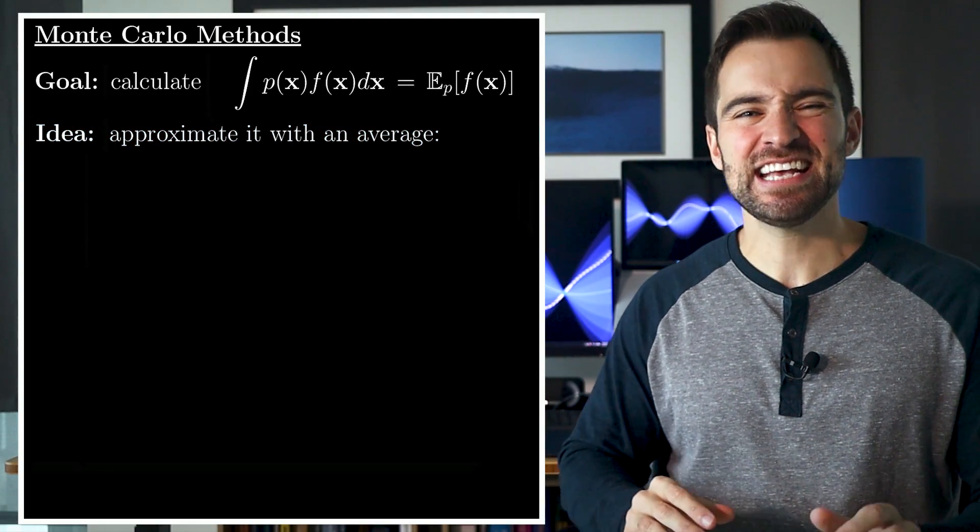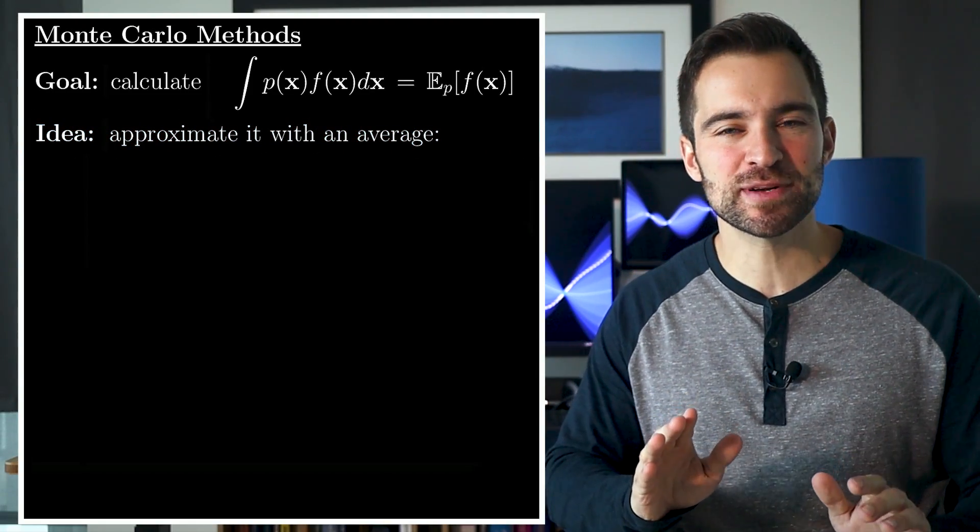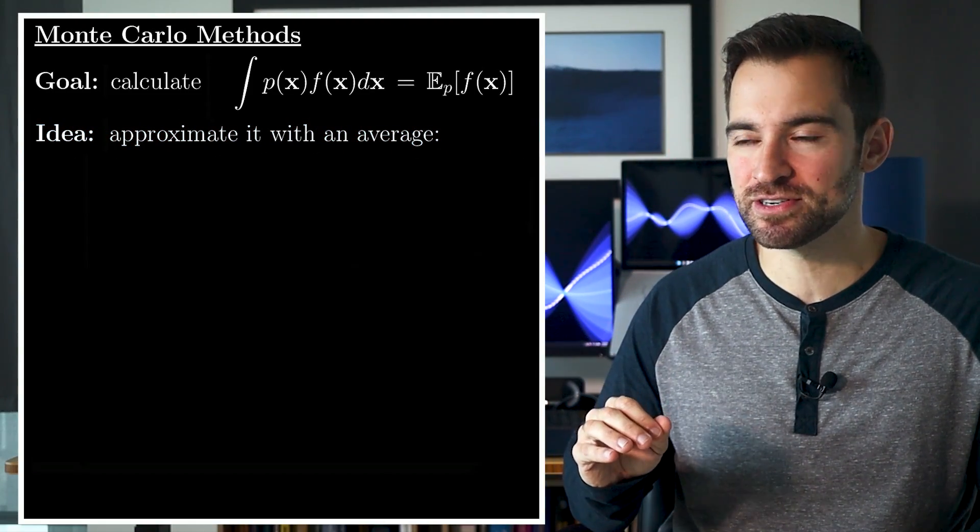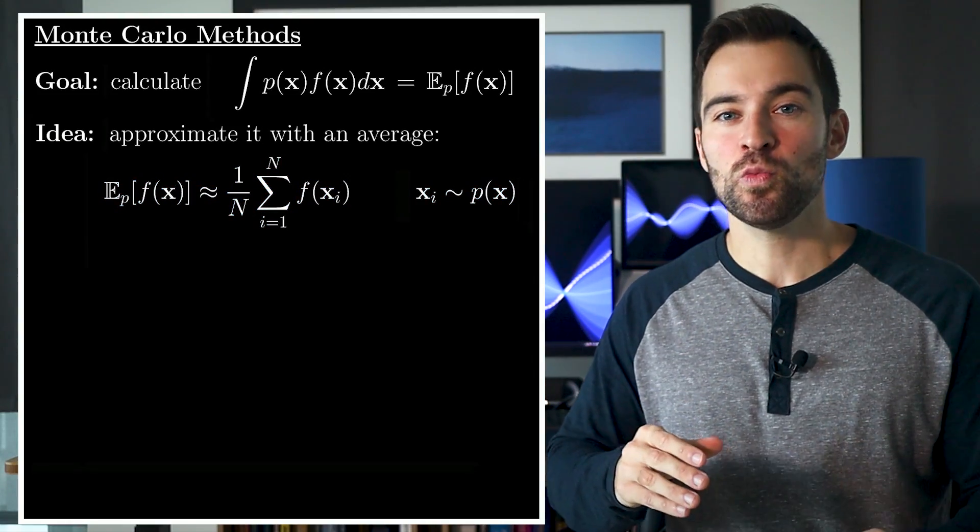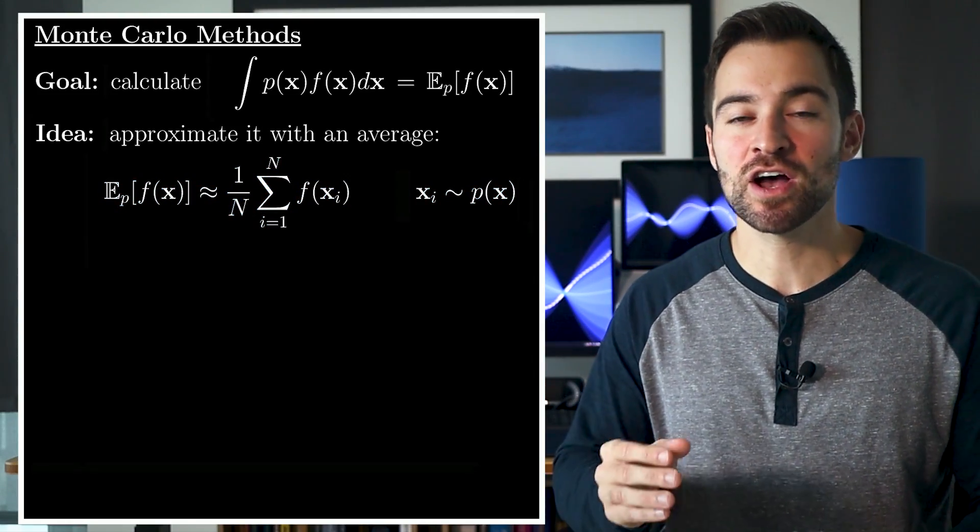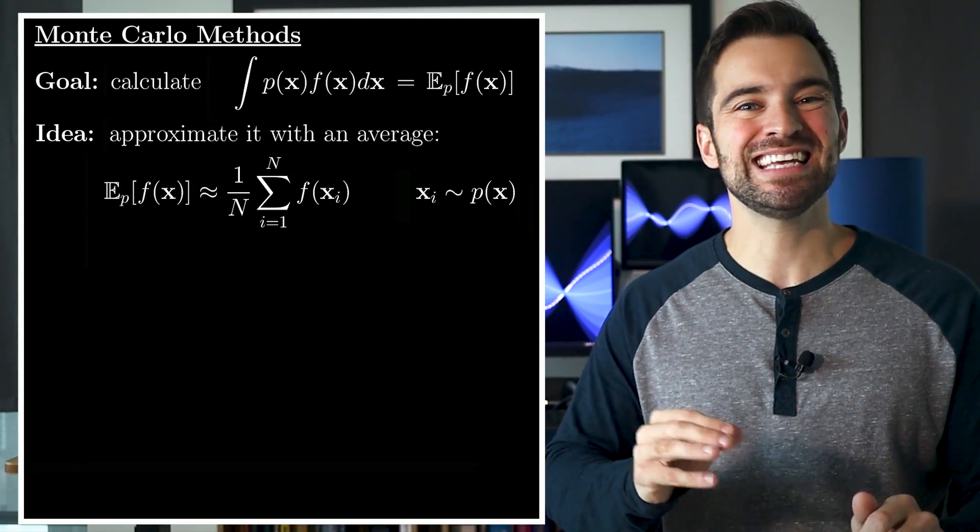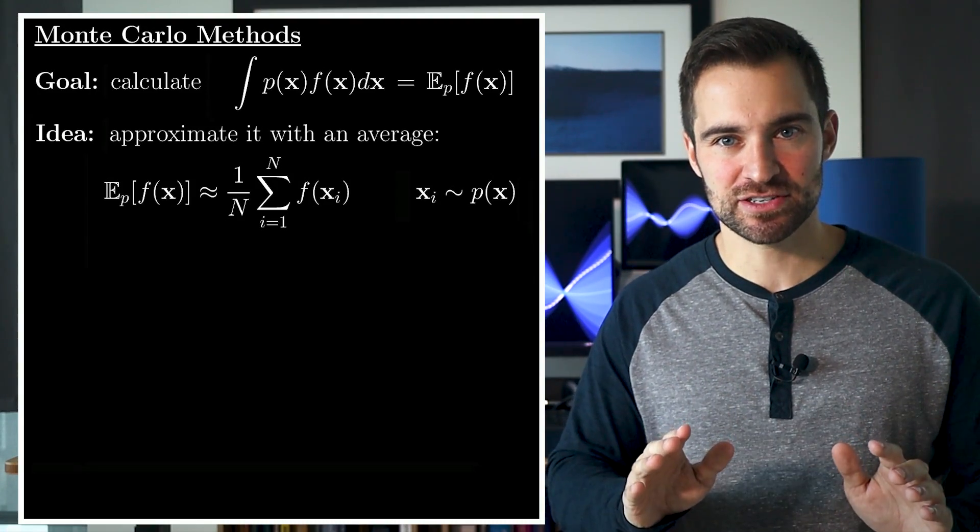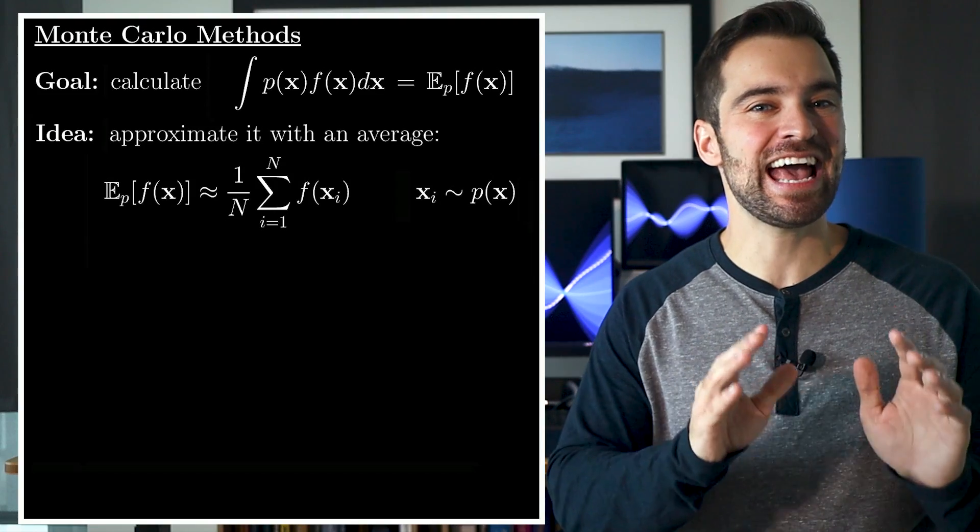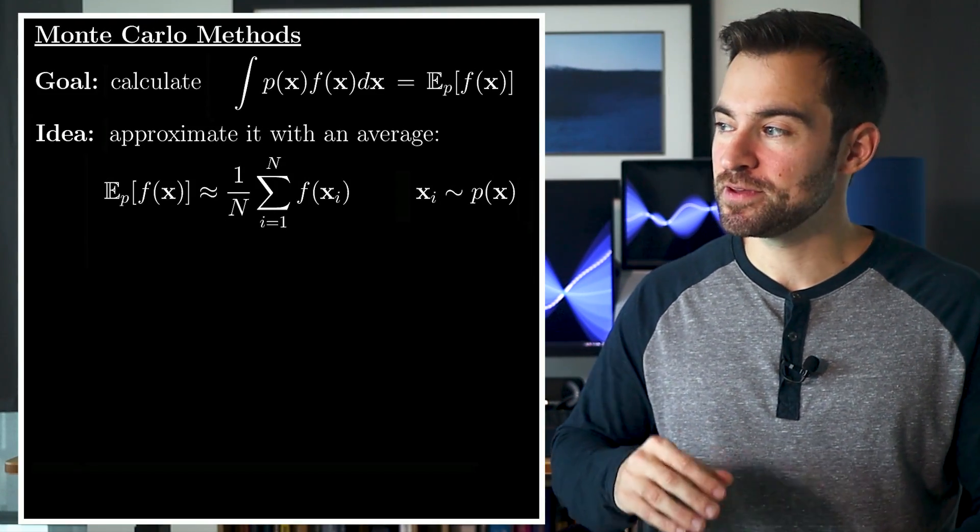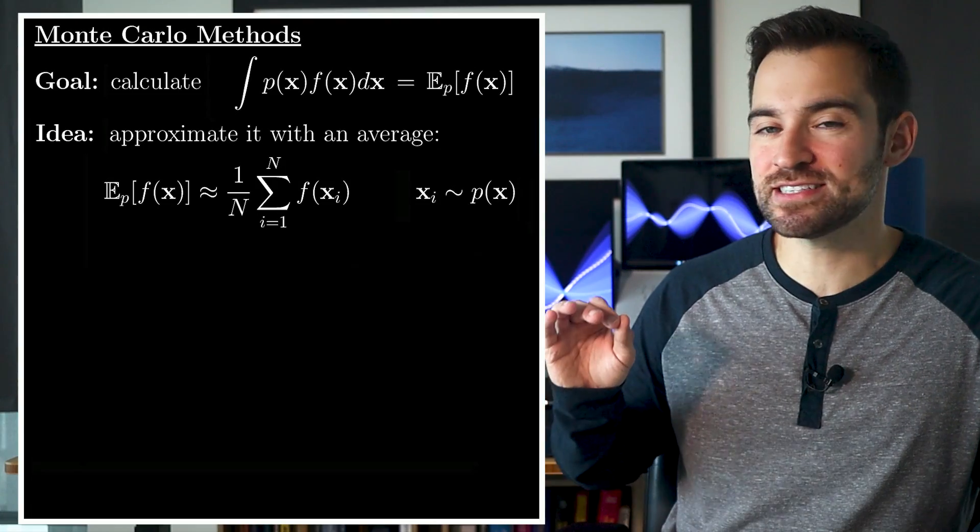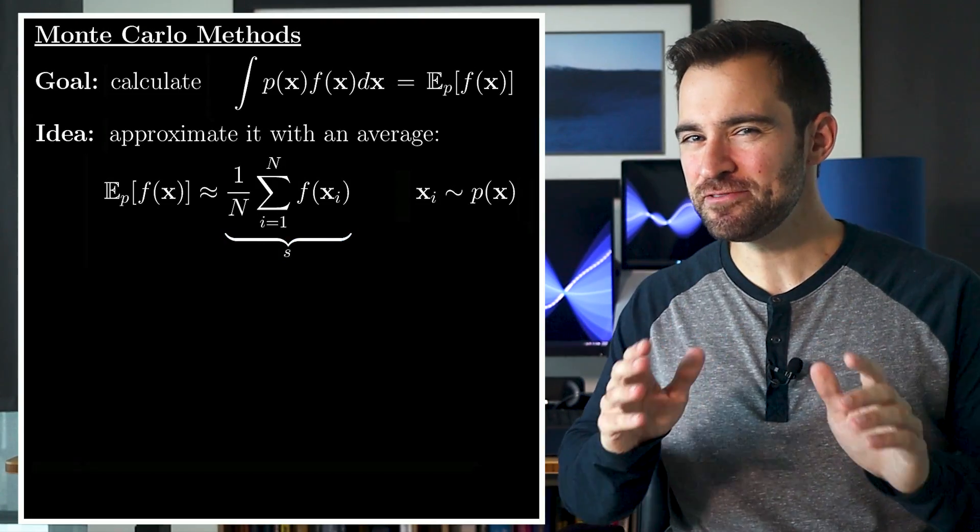The idea is to merely approximate the expectation with an average. This average. What this says is, we collect n samples of x from the distribution p, plug those into f, and take their average. It turns out that as n gets large, this thing approaches our answer. For the sake of brevity, let's call this s.